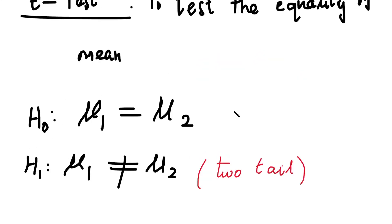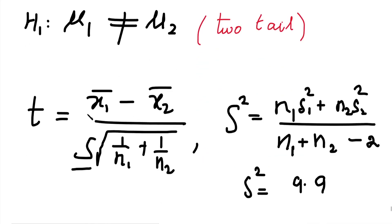Since n1 = 10 and n2 = 12, both are less than 30, so this is a small sample problem. With two samples, this is a difference of means problem. The test statistic is t = (x̄1 minus x̄2) divided by (capital S times root of (1/n1 plus 1/n2)), where capital S squared = (n1·S1² + n2·S2²) / (n1 + n2 − 2). Equivalently, S² = [summation(x1−x̄1)² + summation(x2−x̄2)²] / (n1 + n2 − 2).